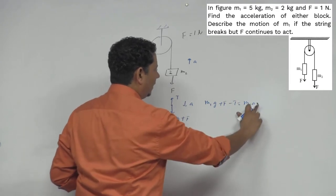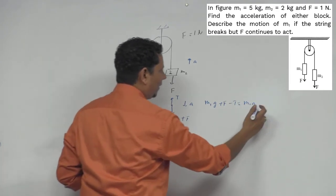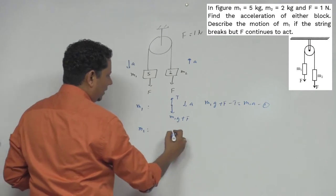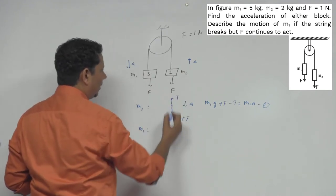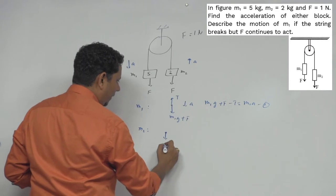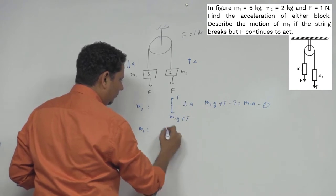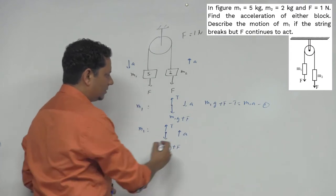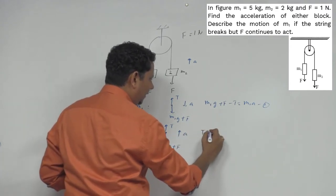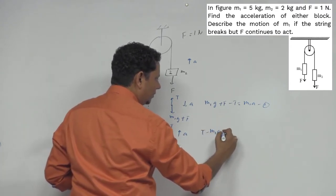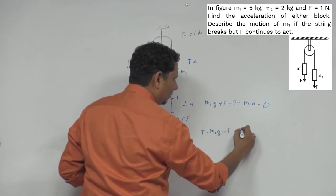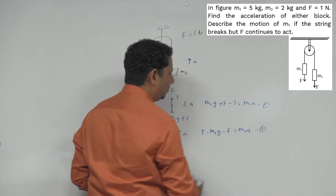Your m1 a - this will be your equation 1. Now the second block m2, when we make its FBD, on m2 block downward there is m2 g plus F, and upward your tension T. And this is moving with acceleration a, so T minus m2 g minus F will be equal to m2 a. This is your equation 2.